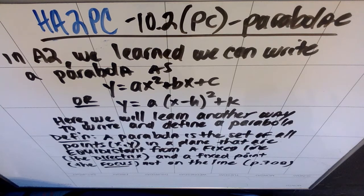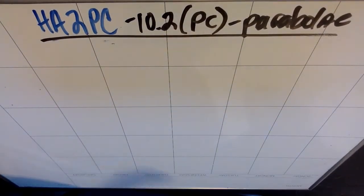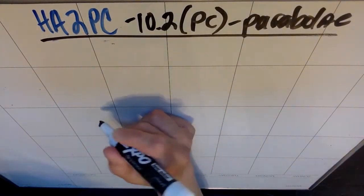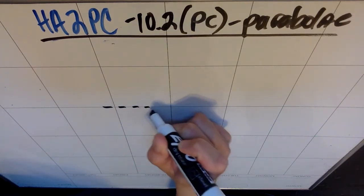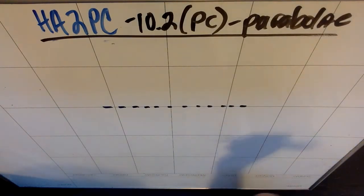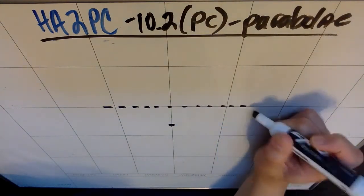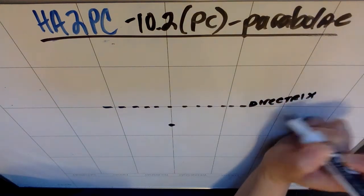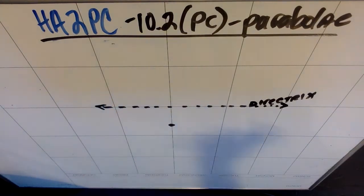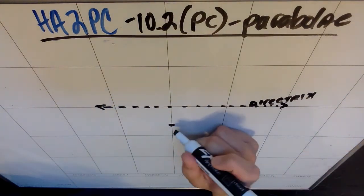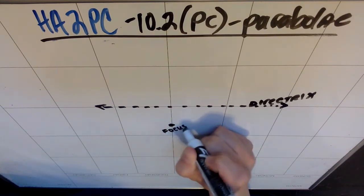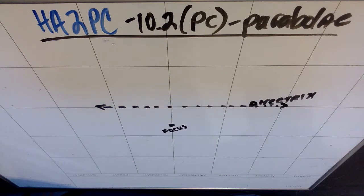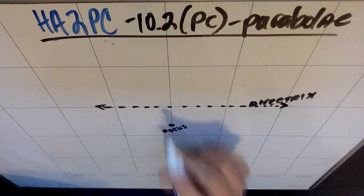Let me walk you through what we're talking about. If you draw a fixed line — I'm tracing on my whiteboard — that line is called the directrix, and it goes on forever in both directions. And this point is called the focus. I drew the focus below the directrix, but you could also draw it above. A parabola is the set of all points such that the distance from that point to the focus equals the distance from that point to the line.